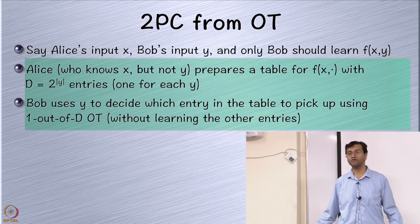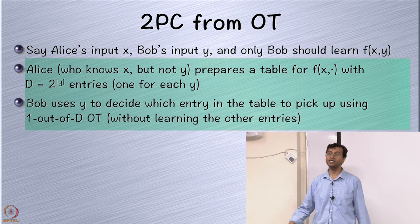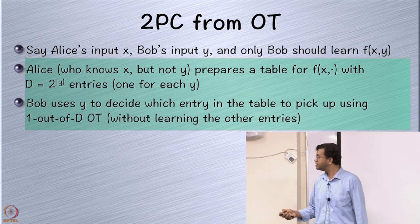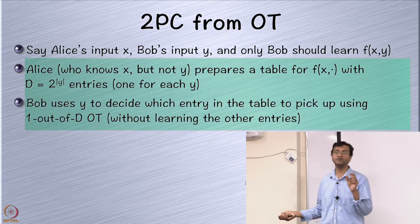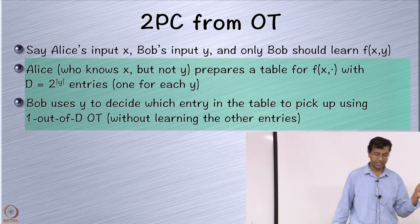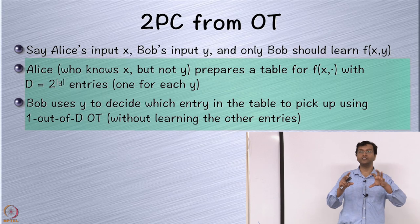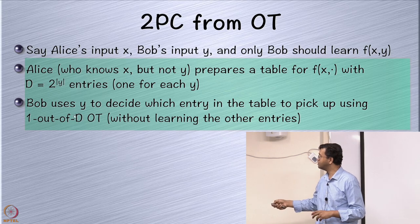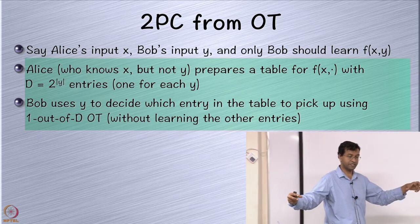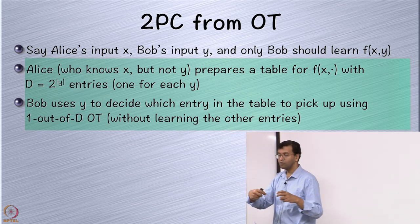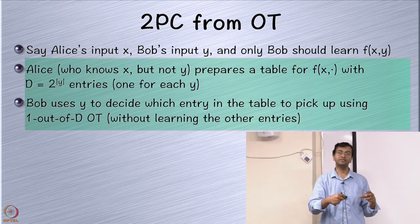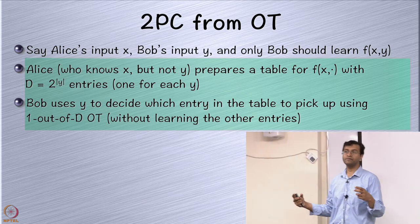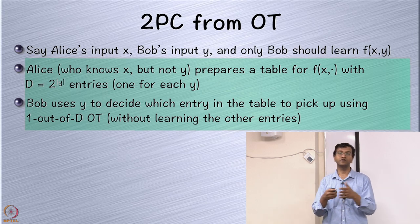Alice prepares this list of all possible values of f(x, y) depending on which y Bob has. Then Bob picks up one of these values using oblivious transfer. What I showed earlier was a one-out-of-two oblivious transfer — here what I want is one-out-of-d oblivious transfer. There are d pieces of information and Bob comes in and obliviously picks up one of them, learning only f(x, y) and nothing else.